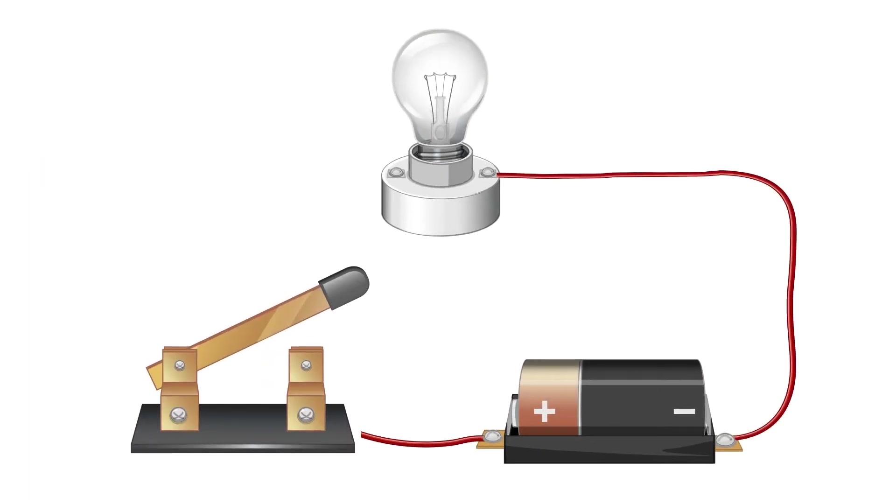Here's a circuit consisting of one battery, a bulb and a switch. When the switch is closed or in the on position, the bulb lights up.